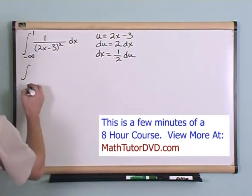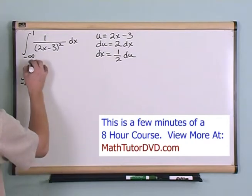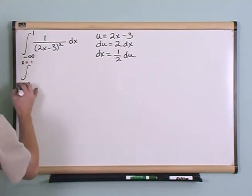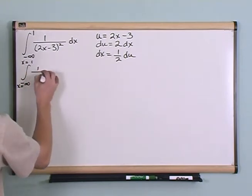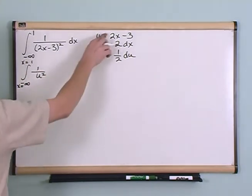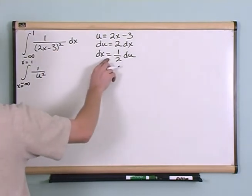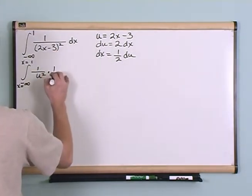So when you do this integration you'll have negative infinity to one, and don't forget this is x, these limits are in terms of x. Okay, and you'll have one over u squared because we defined u like this, but then dx we defined like this so we'll have one-half du.